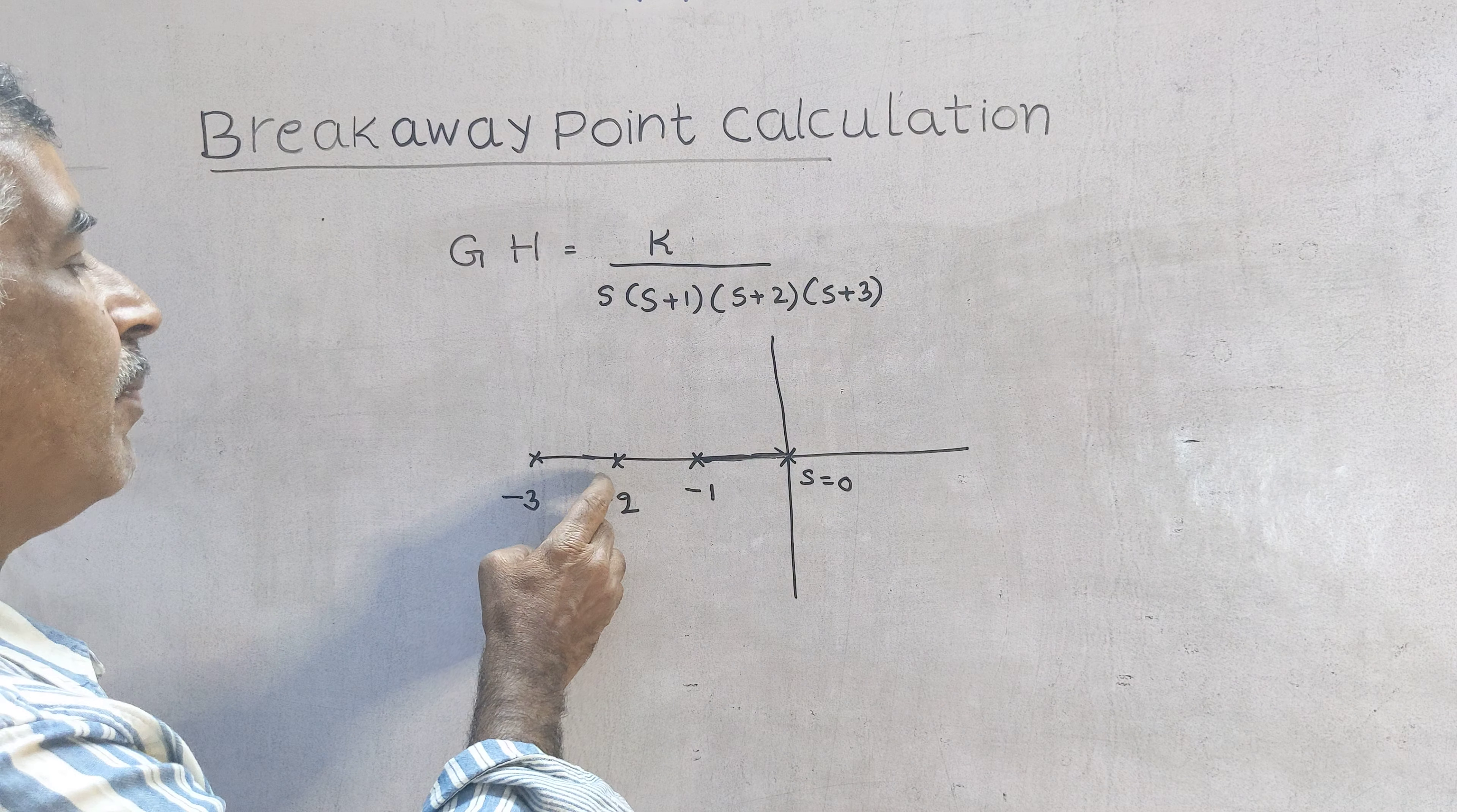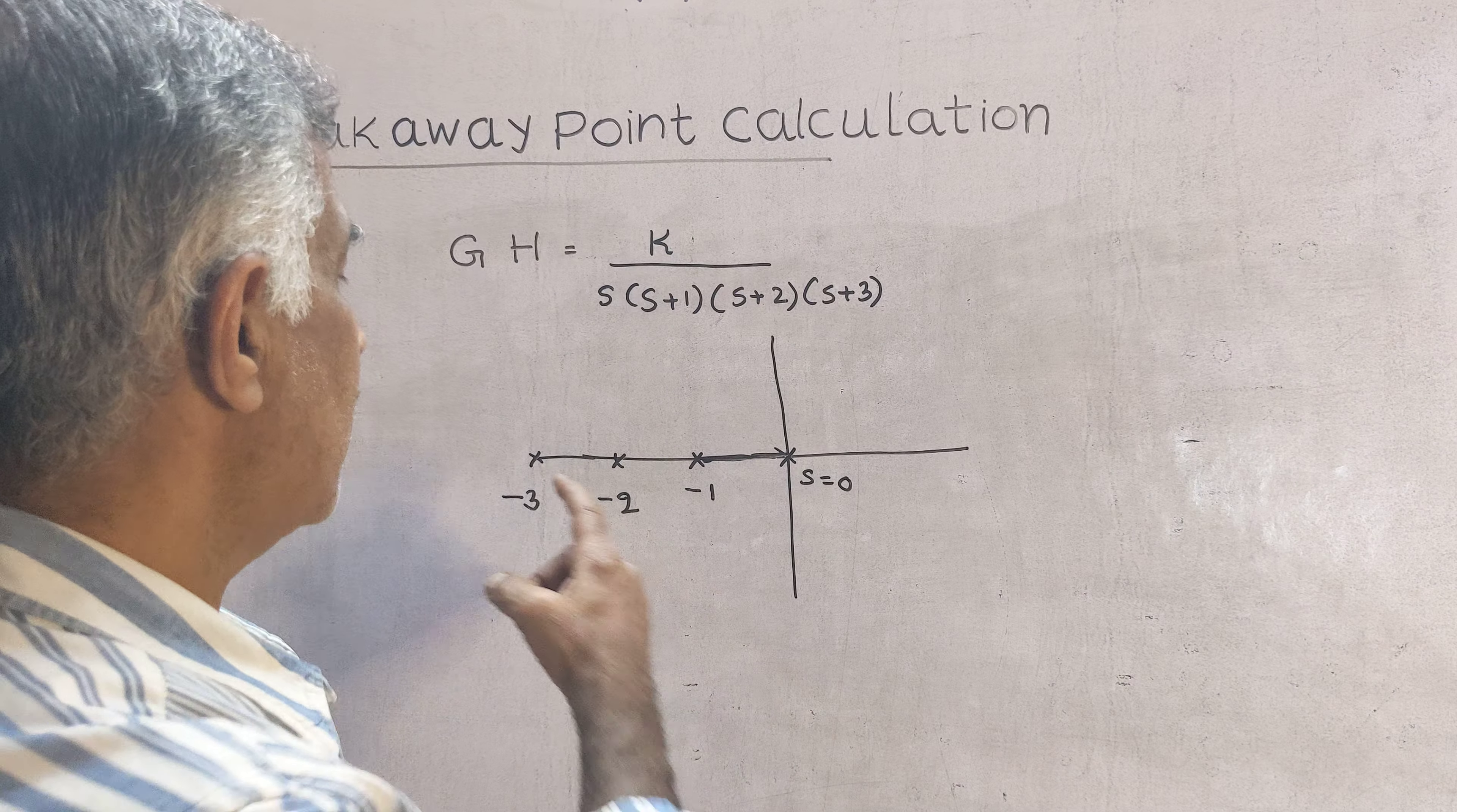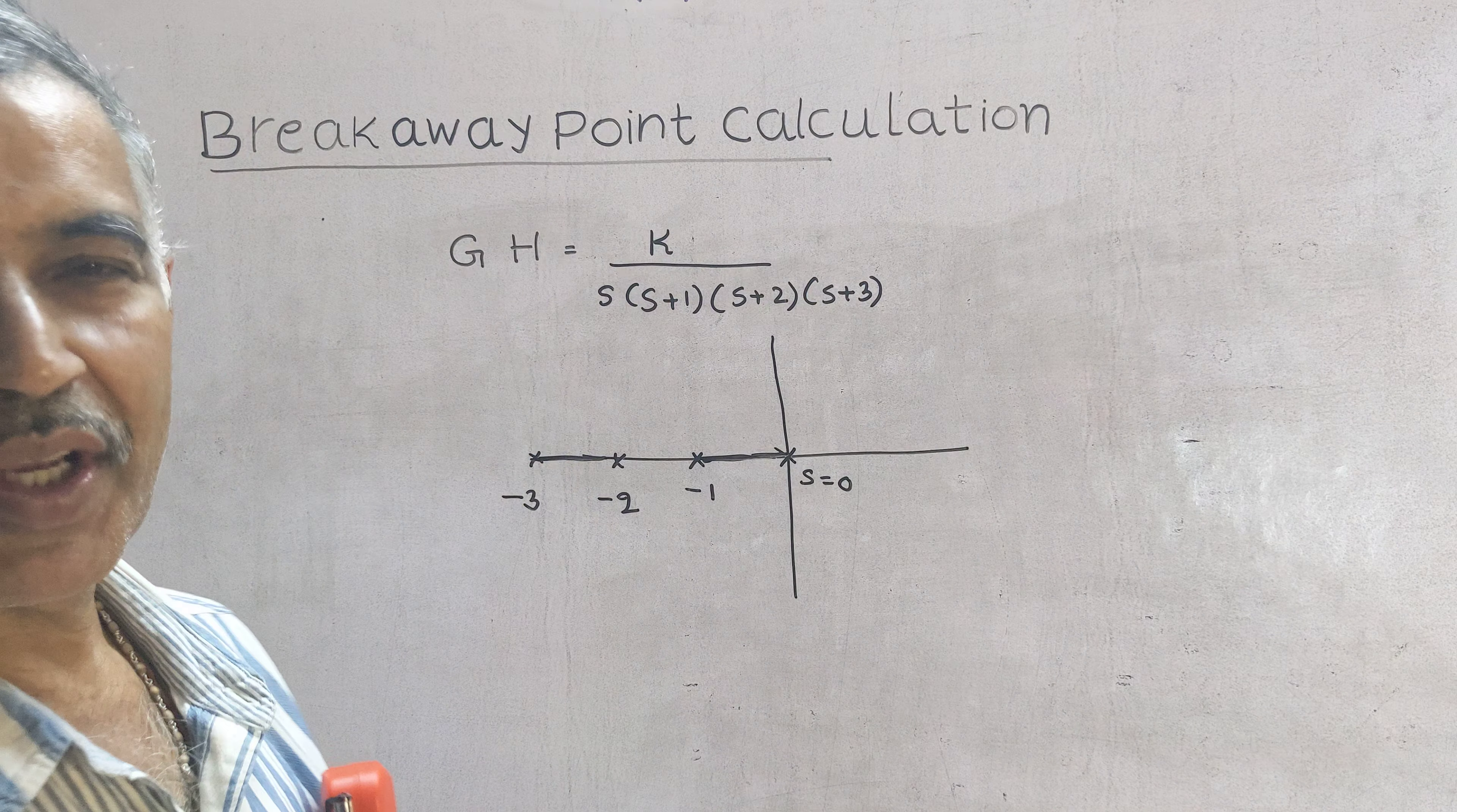Next between minus 2 and minus 3 definitely there is root locus. The reason is for these points between minus 2 and minus 3 to their right the number of poles is 3. Therefore there will be root locus.